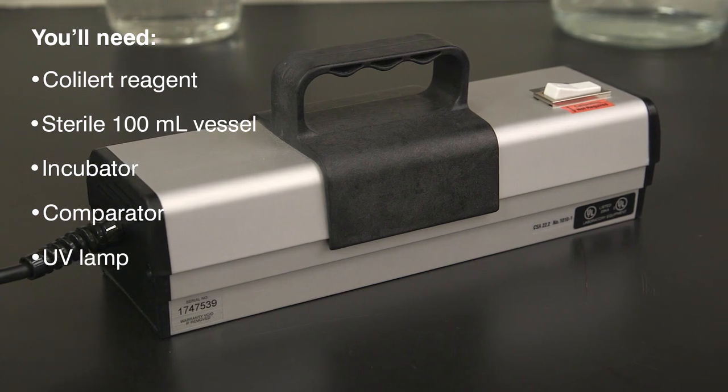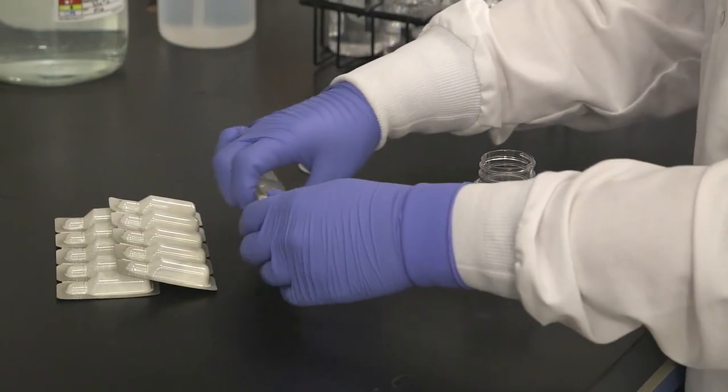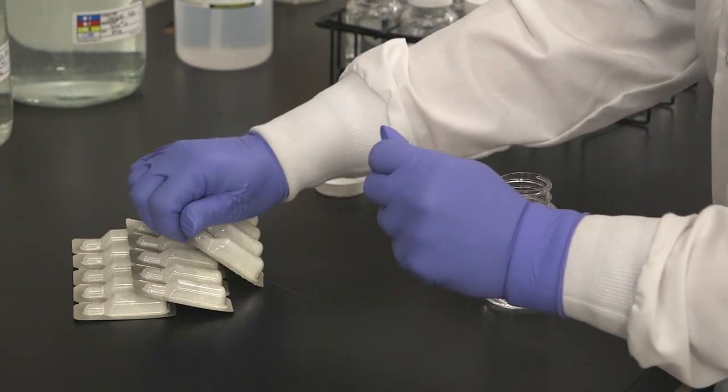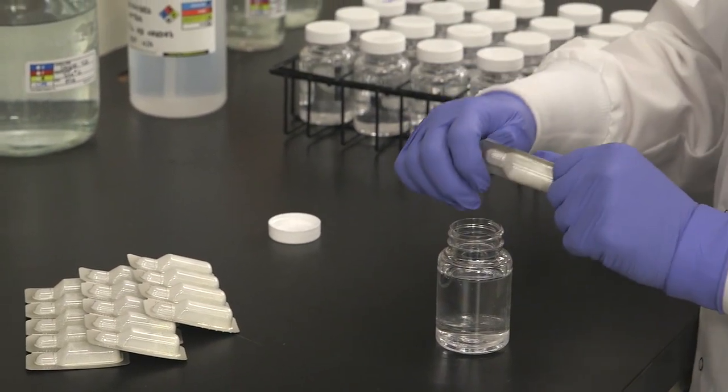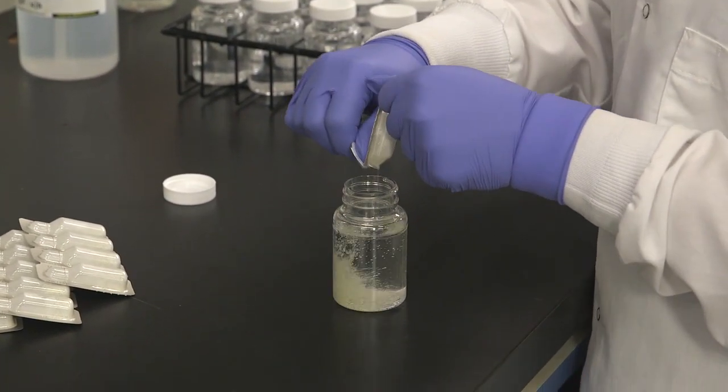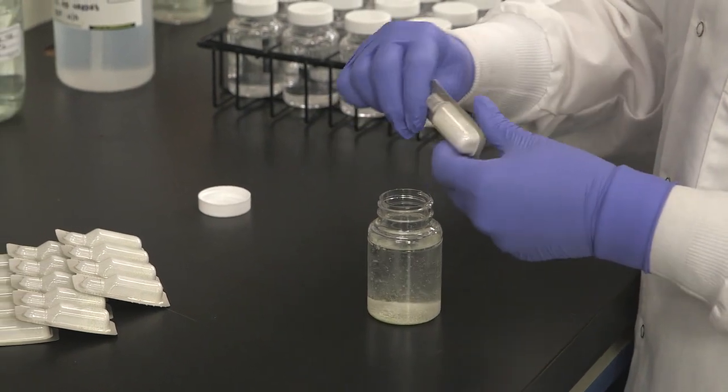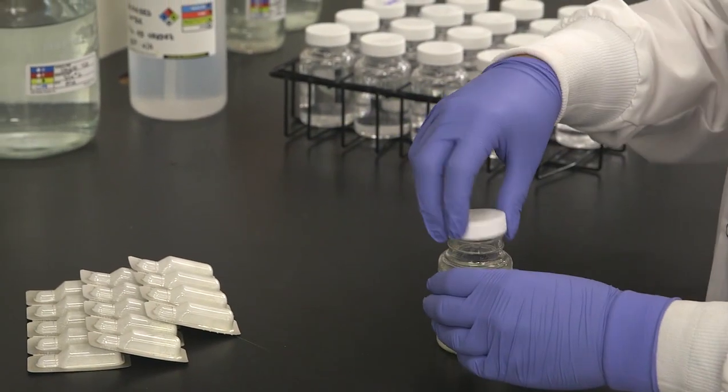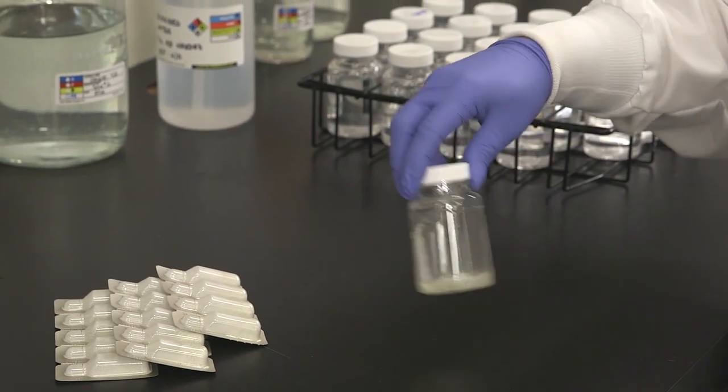Separate one Coalert pack from its strip, taking care not to accidentally open the other packs. Snap open the reagent pack and pour the powder into a 100 ml water sample. Cap the vessel and shake to dissolve the Coalert powder.